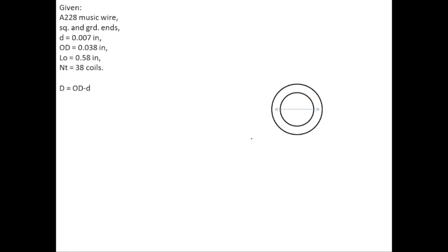Now let's find the mean diameter of the spring, which equals OD minus d. Looking at the top view of the spring: the outside diameter minus the two wire radii (which together equal one wire diameter d) gives the mean diameter D. So D = OD − d, and putting in the values gives D = 0.031 inches.